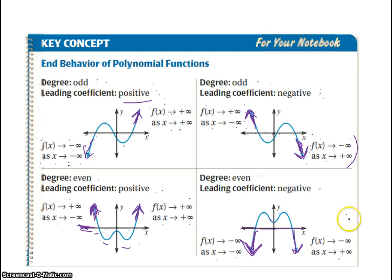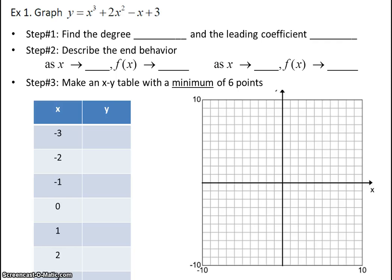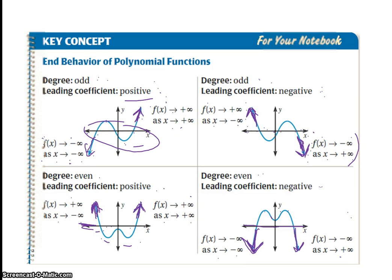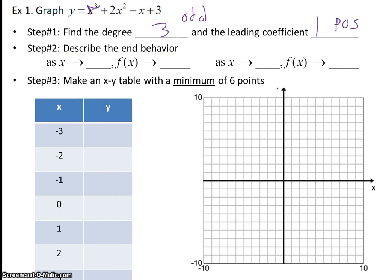So from the degree and the leading coefficient, we know the end behavior arrows of our graph, though that doesn't tell us what happens in the middle. For graphing, first we look at the end behavior. The degree of this polynomial is 3, which is odd. The leading coefficient is 1, which is positive. So with an odd degree and positive leading coefficient, I know my arrows look like this — up on the right, down on the left.